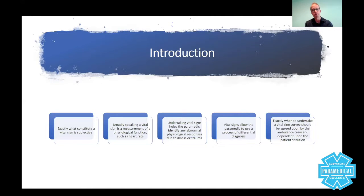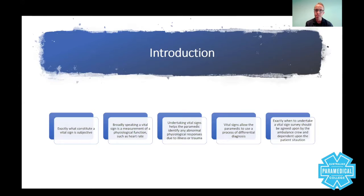Exactly when to undertake a vital sign survey should be agreed upon by the ambulance crew and depends on the patient situation. Generally speaking, we introduce ourselves, go through the primary survey — danger, response, airway, breathing, circulation, disability, and exposure. Then we do your secondary survey: pain assessment, vital signs surveys, history taking, and a head-to-toe survey if trauma is suspected. But you have to do them at the time that's appropriate. If your patient is laying on the floor looking cold and clammy and their partner tells you they're diabetic, you're going to do a blood sugar test pretty quickly rather than checking body temperature first. You have to apply a little bit of decision making.